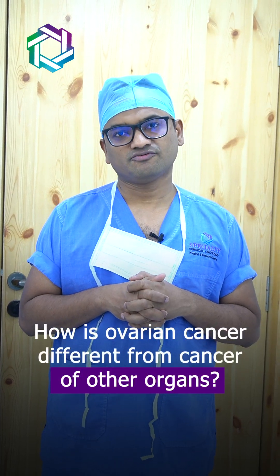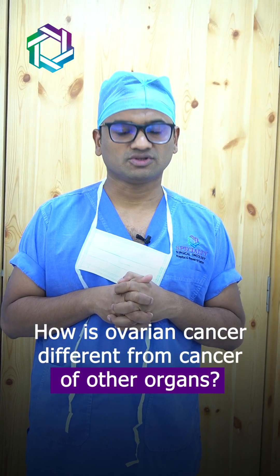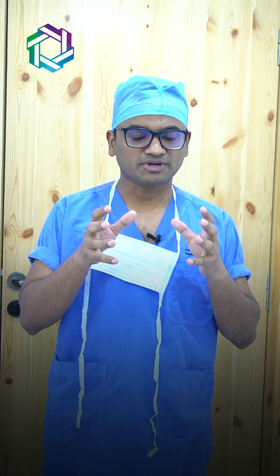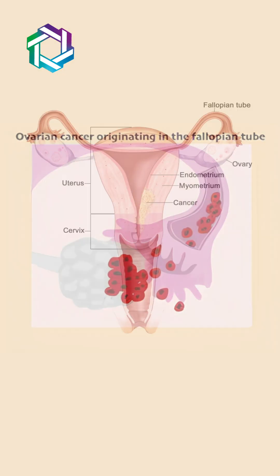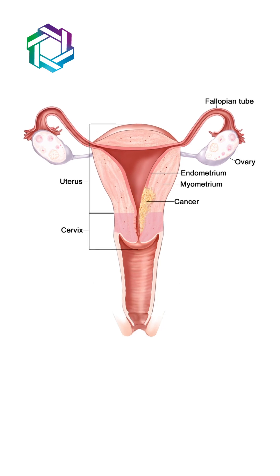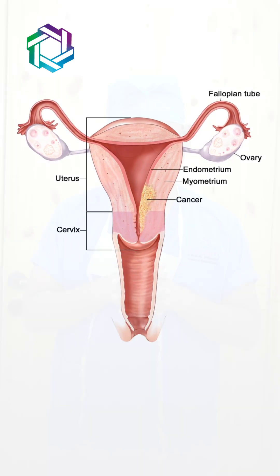How ovarian cancer is different from cancers of other organs: in other organs, the cell of origin of cancer usually resides in the organ itself. In comparison, the latest research on ovarian cancer has shown that in the majority of cases, the cell of origin comes from the fallopian tubes or the endometrial lining of the uterus.